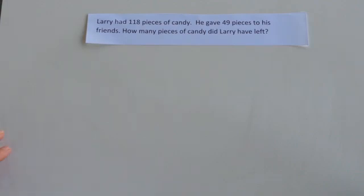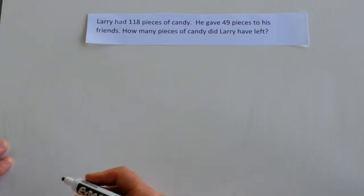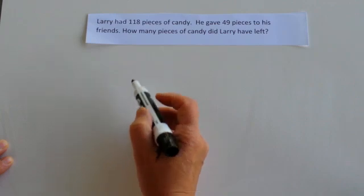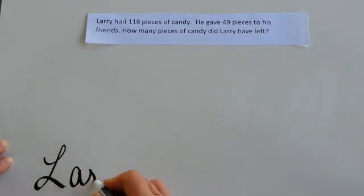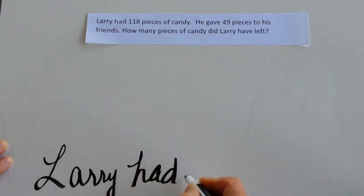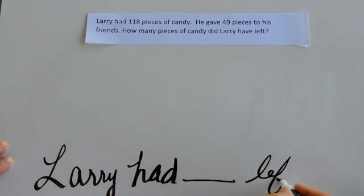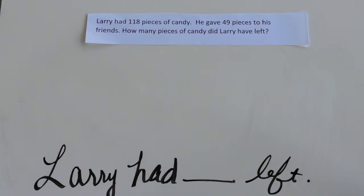Step 2: write a sentence — a sentence that will help us paint a picture of how we're going to solve, or what the question will look like in the end as an answer. How many pieces of candy did Larry have left? Larry had blank left. Now we need to determine who and/or what is involved in the problem. Well, there's Larry — he's the only one in the problem, the only who. What is involved? He has candy, he's giving some away, and we want to know how much he'll have left.